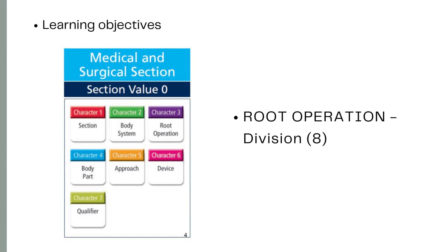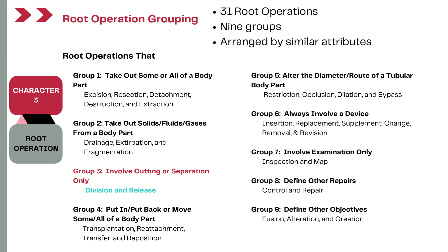At the end of this learning session, we will have a better understanding of coding the root operation Division from the third group of root operations, and we will also look at an example of coding from the medical and surgical section. Remember, the medical and surgical section is the most important and biggest section of ICD-10-PCS. If you master this section, all the other sections will be easy to code. There are 31 root operations in the medical and surgical section alone, divided into nine groups based on similar procedures. Today we are looking at the third group, which involves root operations that involve cutting or separation only.